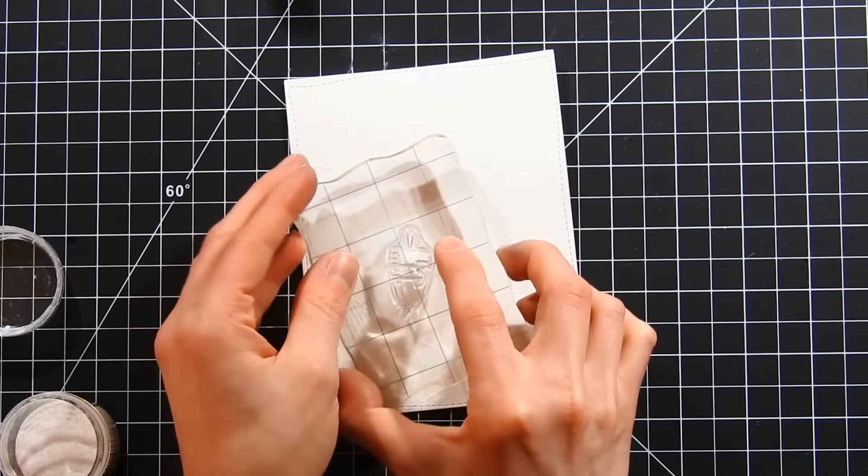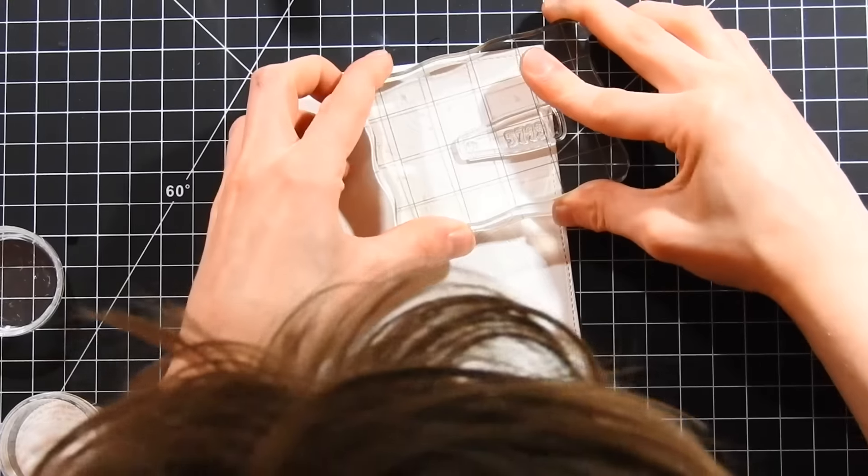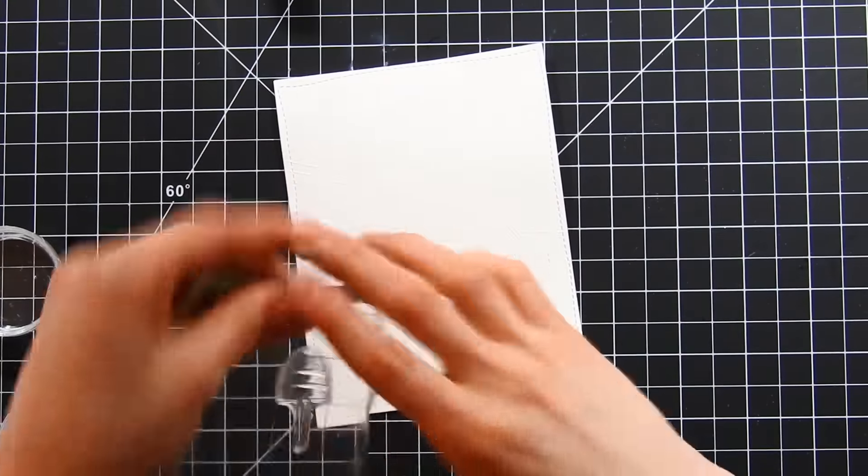I'm also going to stamp a couple of the little buoys that are included in this set. There are three different buoys—I'm gonna stamp all three of them onto my card and then I'll go ahead and heat set those as well.